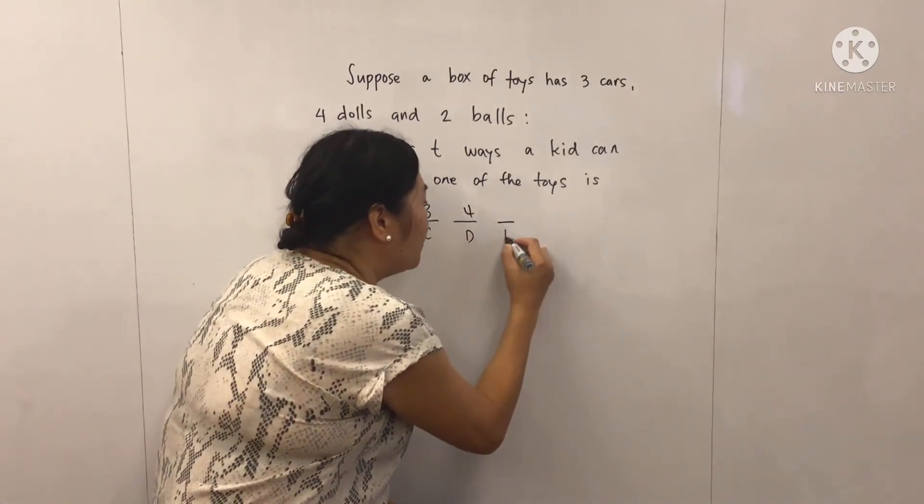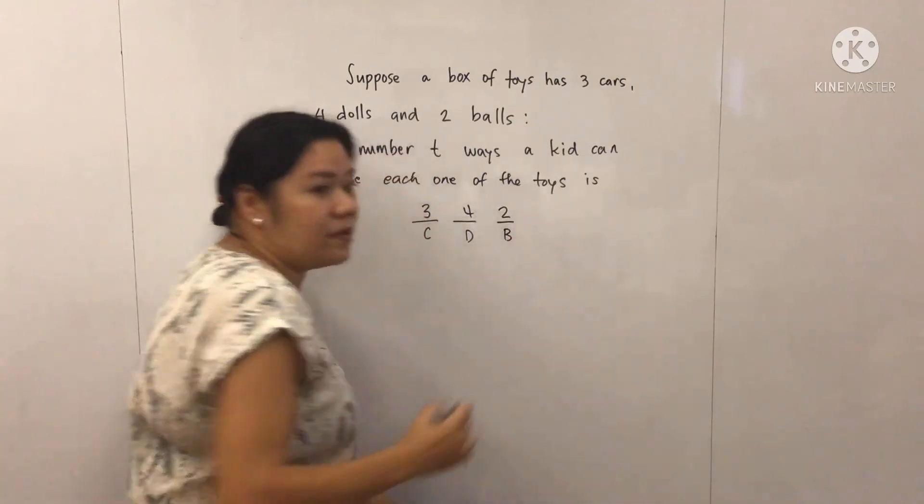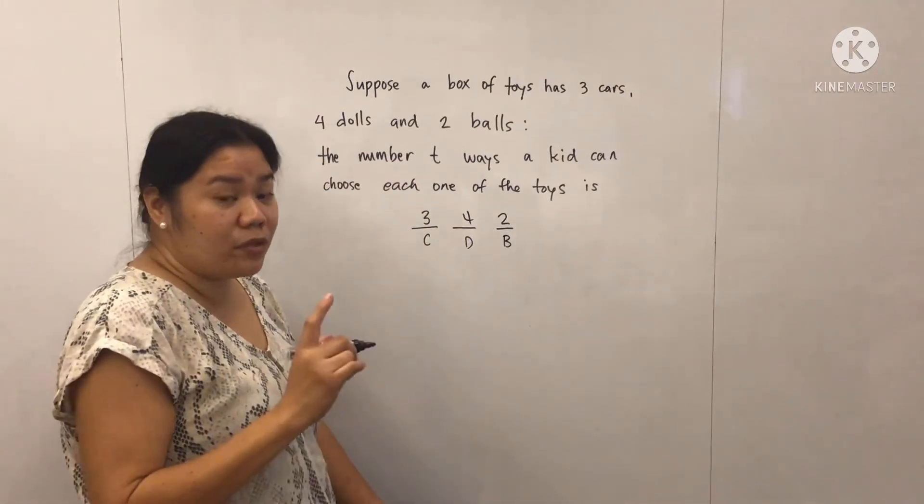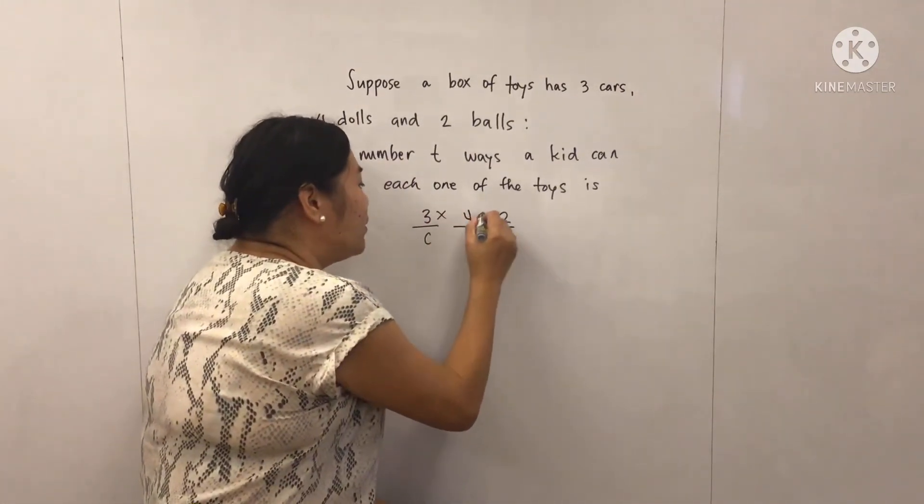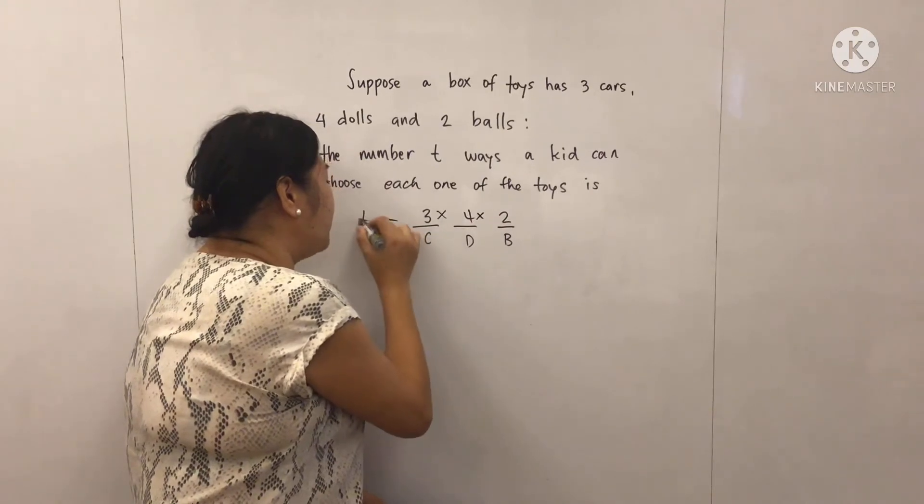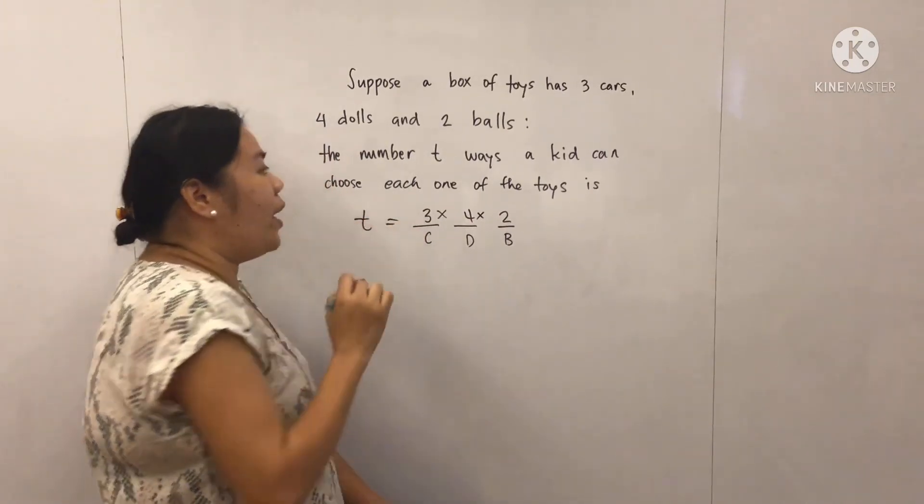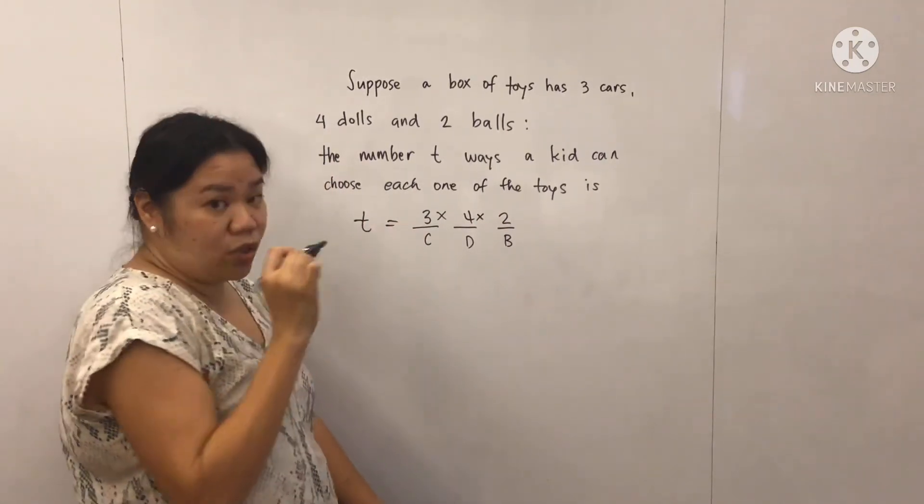And then how many balls do we have? We have two. According to rule principle number two, we just need to multiply this in order for us to get the ways a kid can choose each one of the toys.